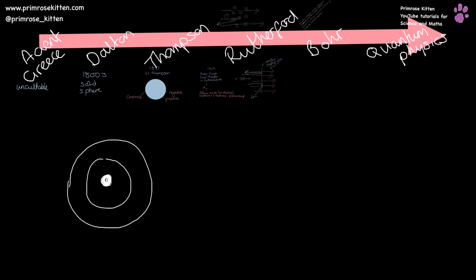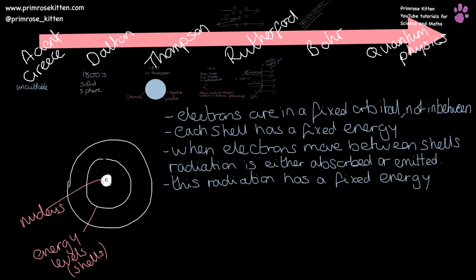Niels Bohr also worked with Rutherford in Manchester and defined where the electrons actually were. He put the electrons into energy levels or shells, with rules attached to them. His rules were that electrons are in fixed orbitals and not in between them; each shell has a fixed energy; and when electrons move between shells, radiation is either absorbed or emitted at a fixed energy. This fits well with evidence we have from stars — when electrons move down an energy level they emit radiation, and when they move up they have absorbed radiation.